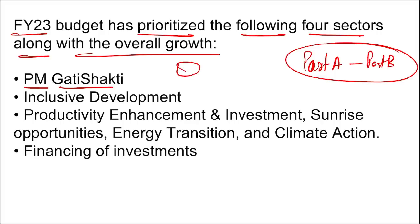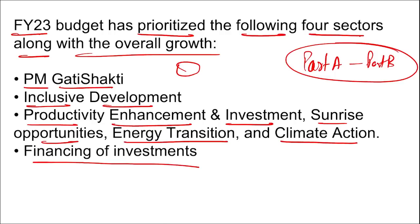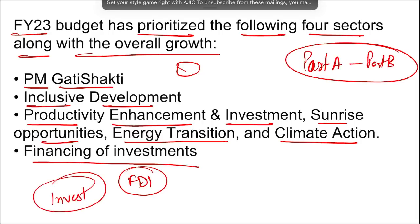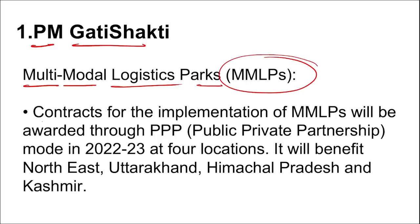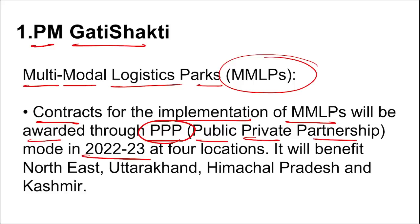The four priority sectors are: PM Gati Shakti (connecting roads and areas across India), inclusive development, productivity enhancement and investment, sunrise opportunities, energy transition and climate action, and financing of investment through foreign direct investment. PM Gati Shakti includes multimodal logistic parks (MMLPs). Contracts for implementing MMLPs will be awarded through the PPP — Public-Private Partnership — model in 2022-23 at four locations, benefiting Northeast, Uttarakhand, Himachal Pradesh, and Kashmir.